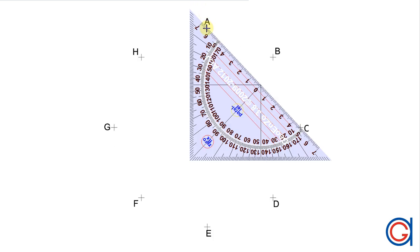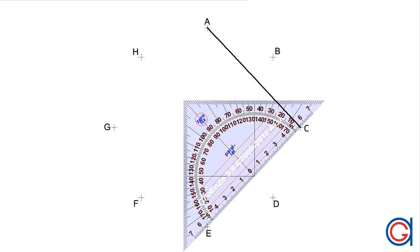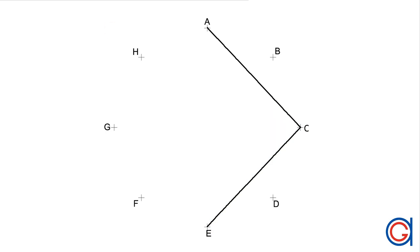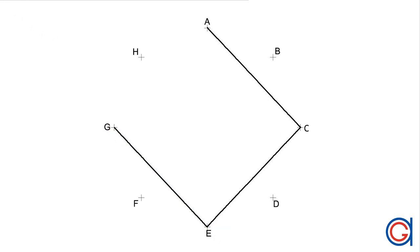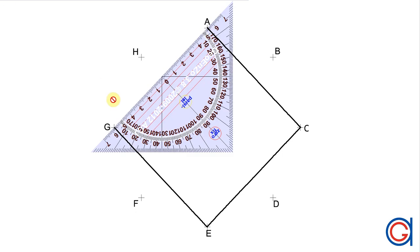So once we have obtained these eight vertices, we will continue to step two, which is to draw our order two octagon, skipping one vertex at a time. First we join vertex A to C, skipping vertex B. Now we join vertex C to E, skipping vertex D. We continue joining vertex E to vertex G, skipping vertex F. Now we join vertex G to A, skipping vertex H.